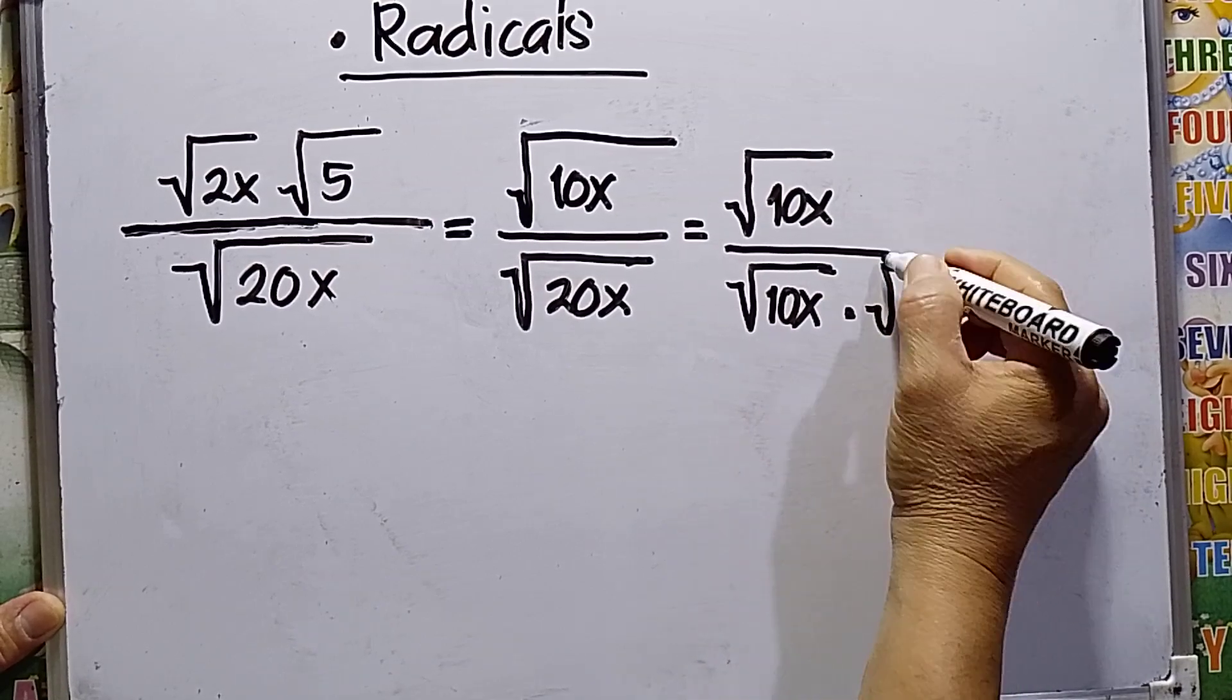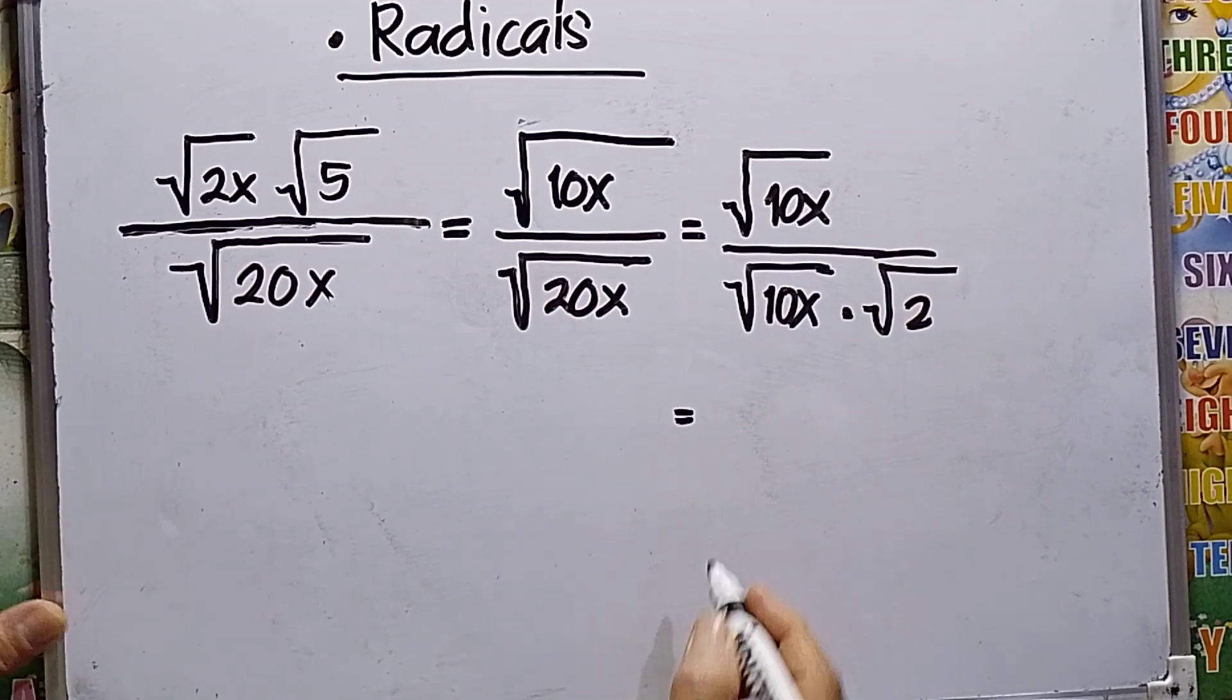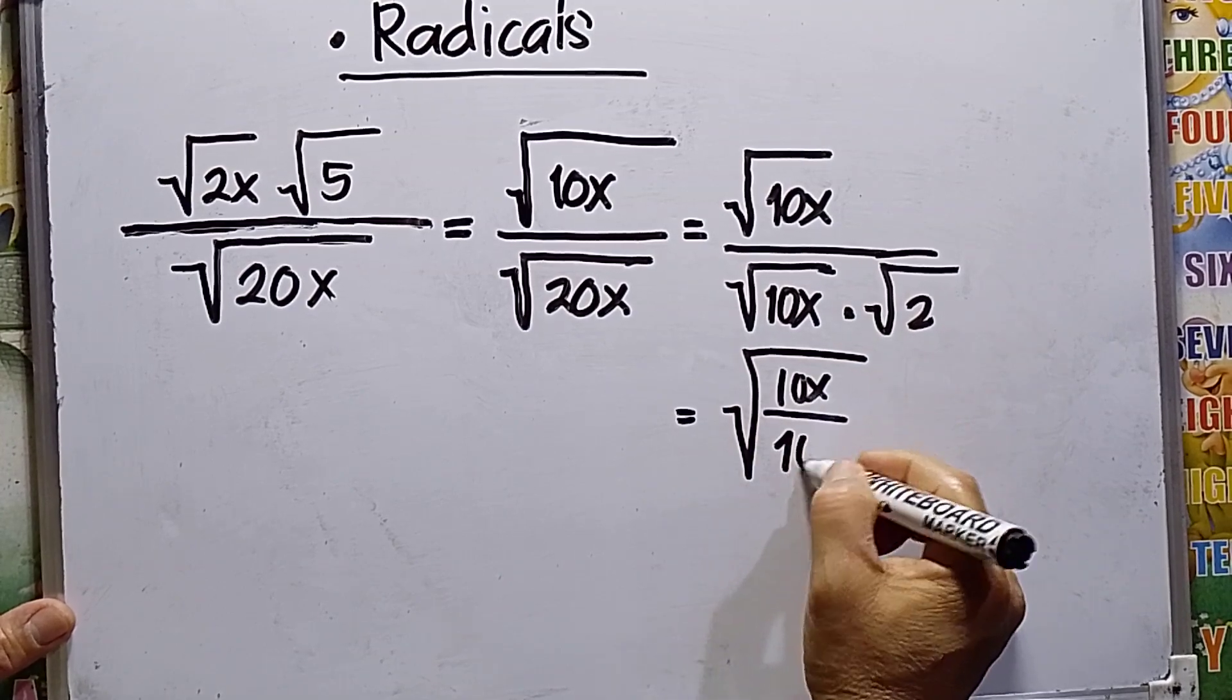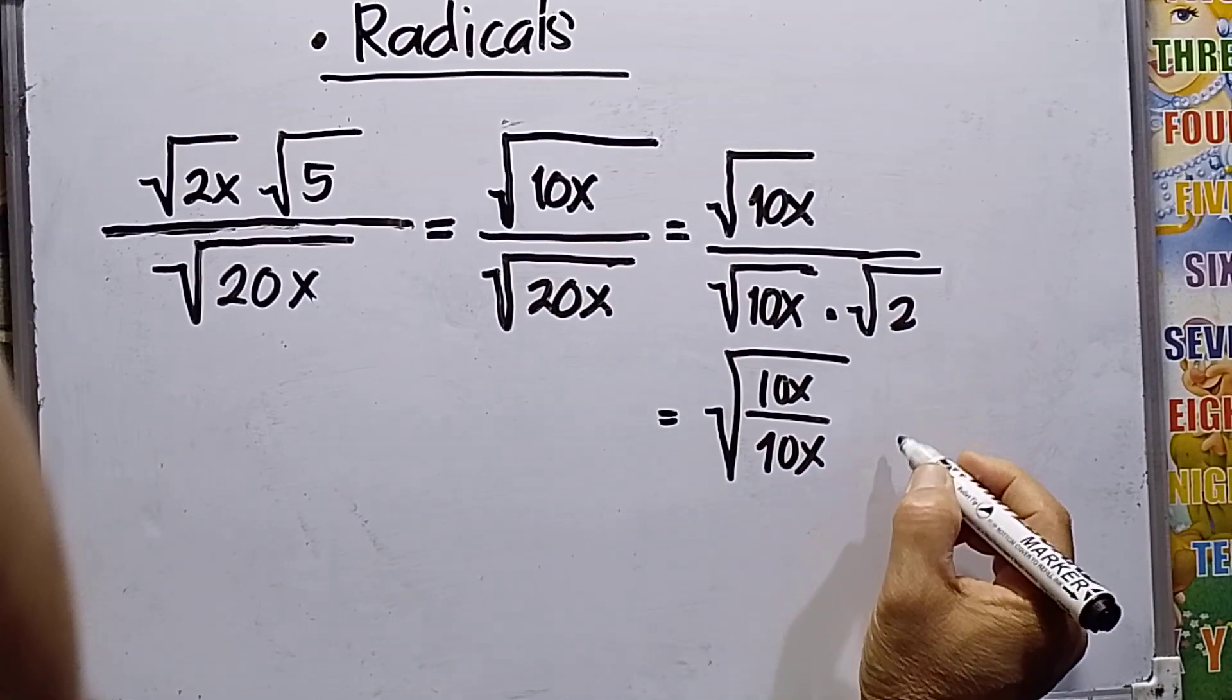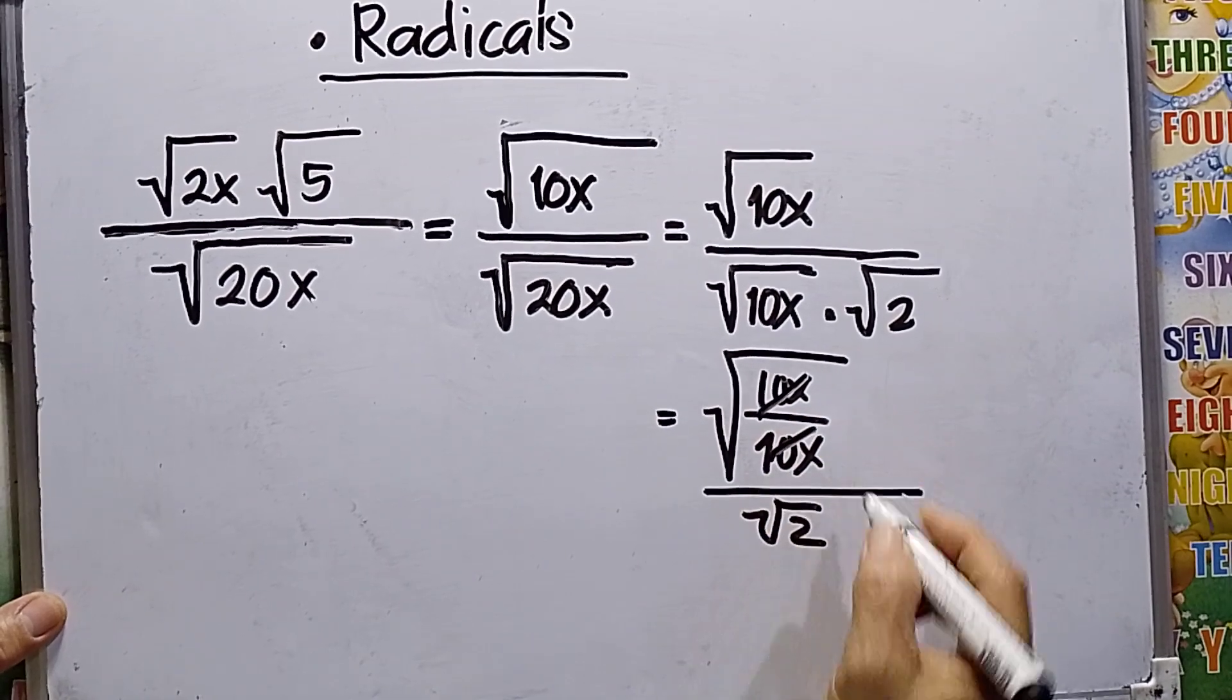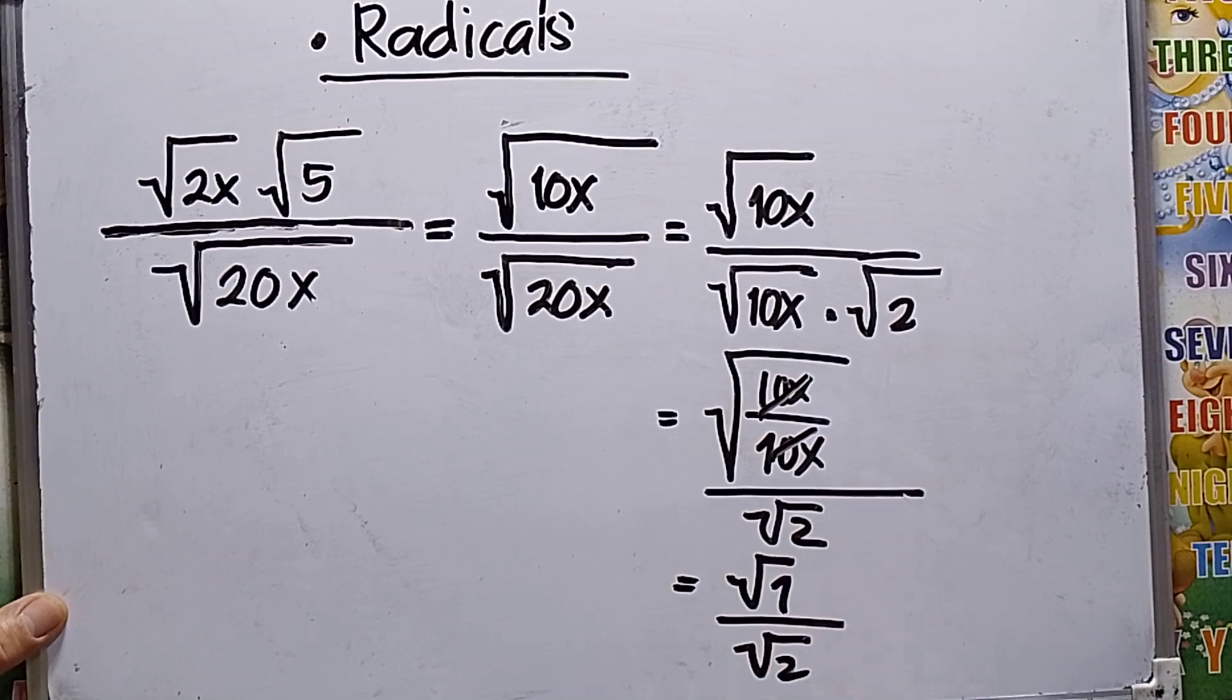This simplifies to 1 over square root of 2. Square root of 1 is 1, so this is 1 over square root of 2, and then I need to rationalize the denominator.